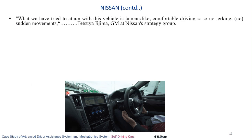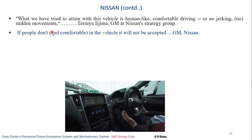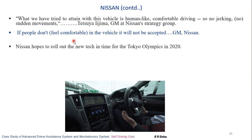The general manager of Nissan's strategy group stated: 'What we have tried to attain with this vehicle is human-like comfortable driving' — no jerking, no sudden movements. They were successful in designing and testing this car. If people don't feel comfortable in the vehicle it will not be accepted. Nissan hoped to roll out this new technology in time for the Tokyo Olympics in 2020, with very precise and accurate testing conducted.